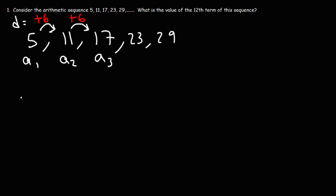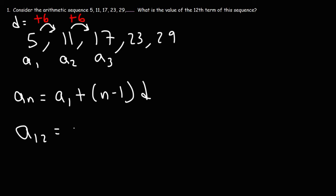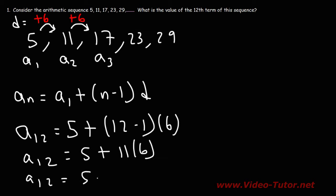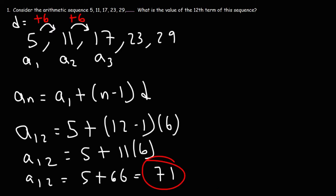The formula that we're going to use is this equation: a sub n is equal to a sub 1 plus n minus 1 times d. So we want to find the 12th term, so n is 12. a sub 1, the first term, is 5. And the common difference in this example is 6. 12 minus 1 is 11. 11 times 6 is 66. Plus 5 is 71. So that is the value of the 12th term.